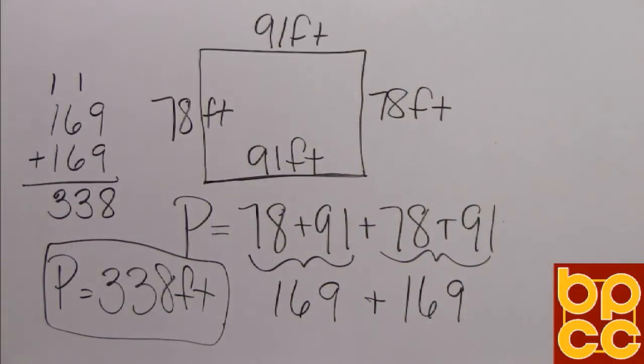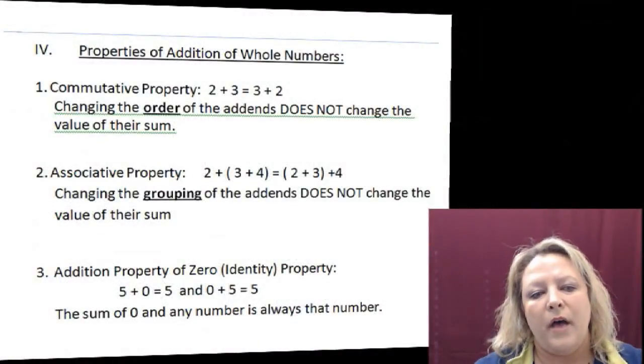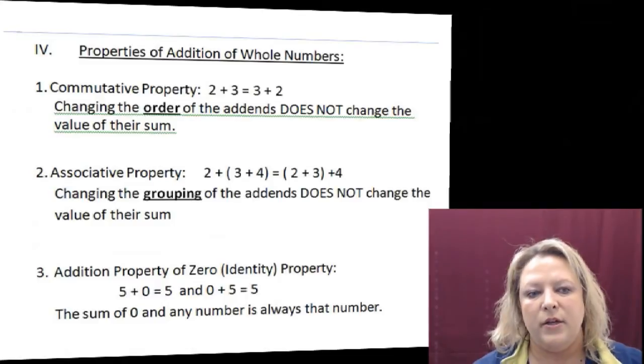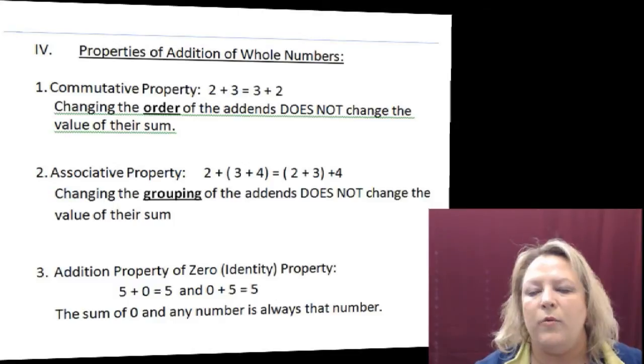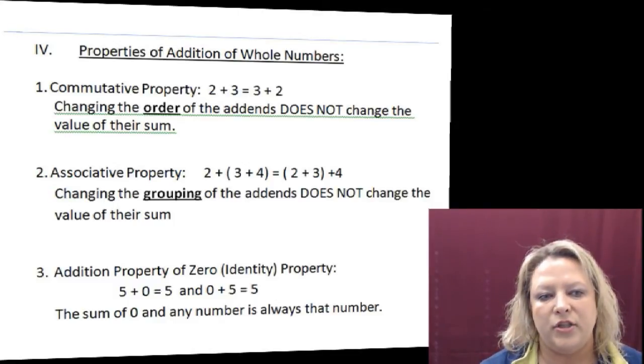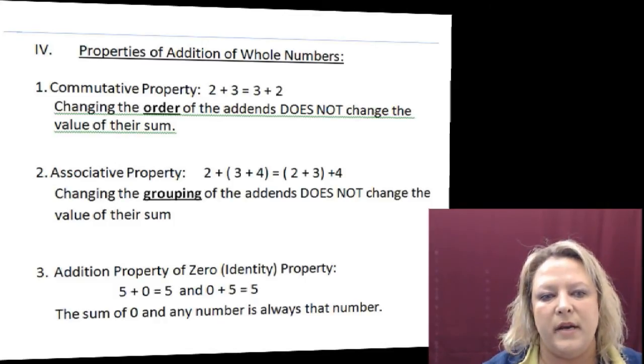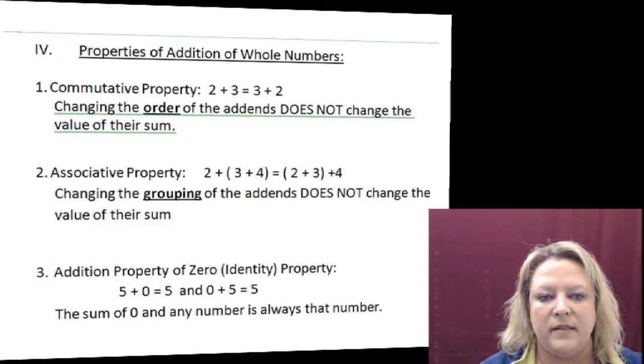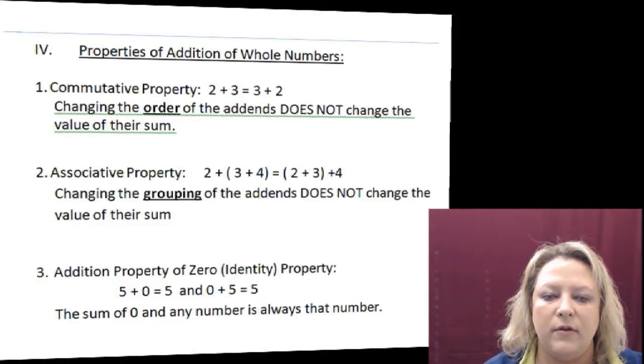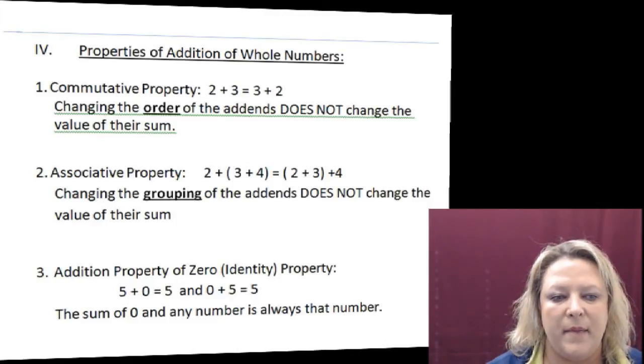Now, we are also going to talk about properties. And properties of addition are a few of them that are important. You have what's called the commutative property. And when you talk about commutative property, we talk about flip-flopping, changing the order of the numbers. So in the problem that you see, it says 2 plus 3 is equal to 3 plus 2. So if you know that 2 plus 3 is 5, then you also know that 3 plus 2 is 5. It does not matter the order that you add them in. You still get the same answer.